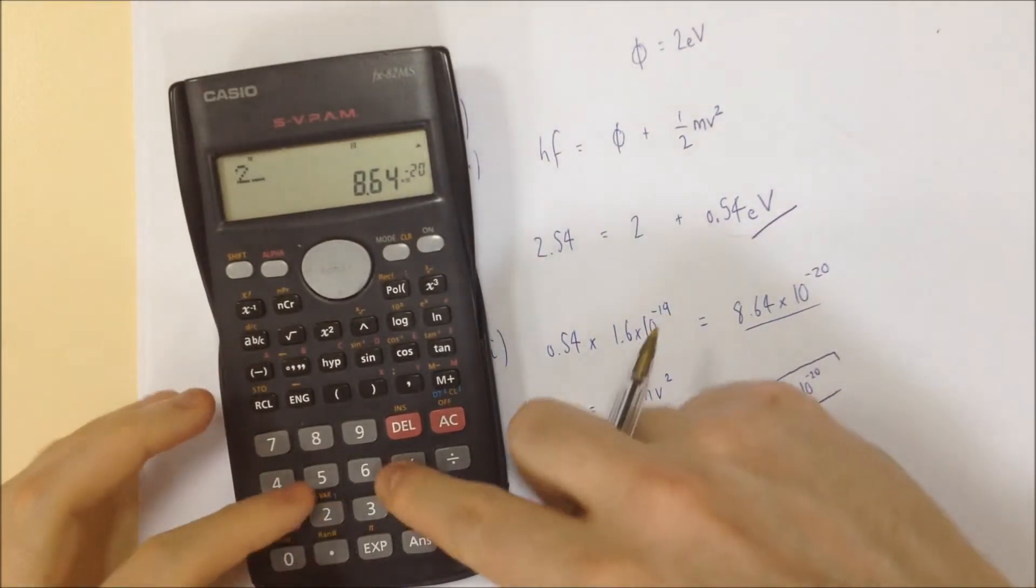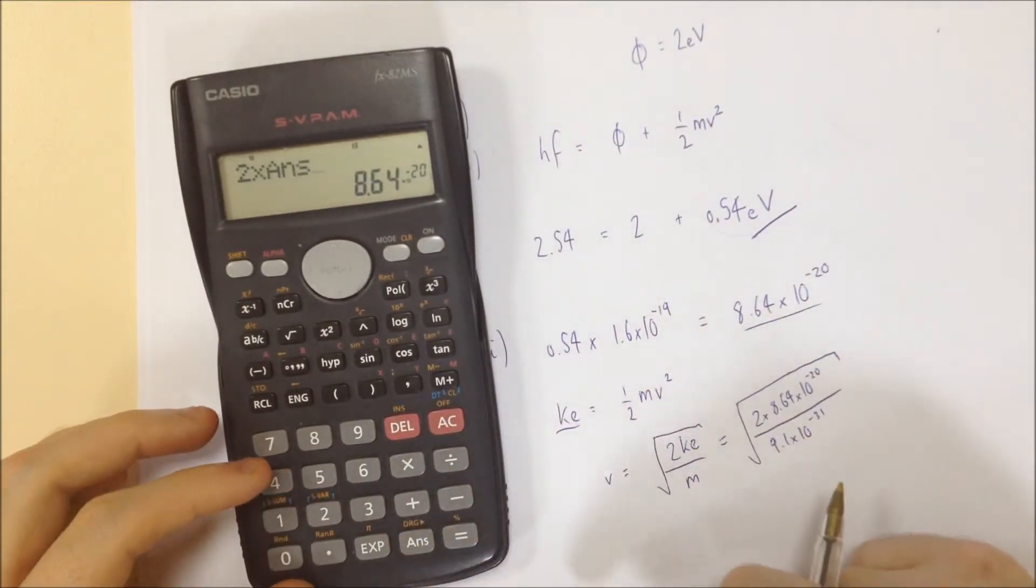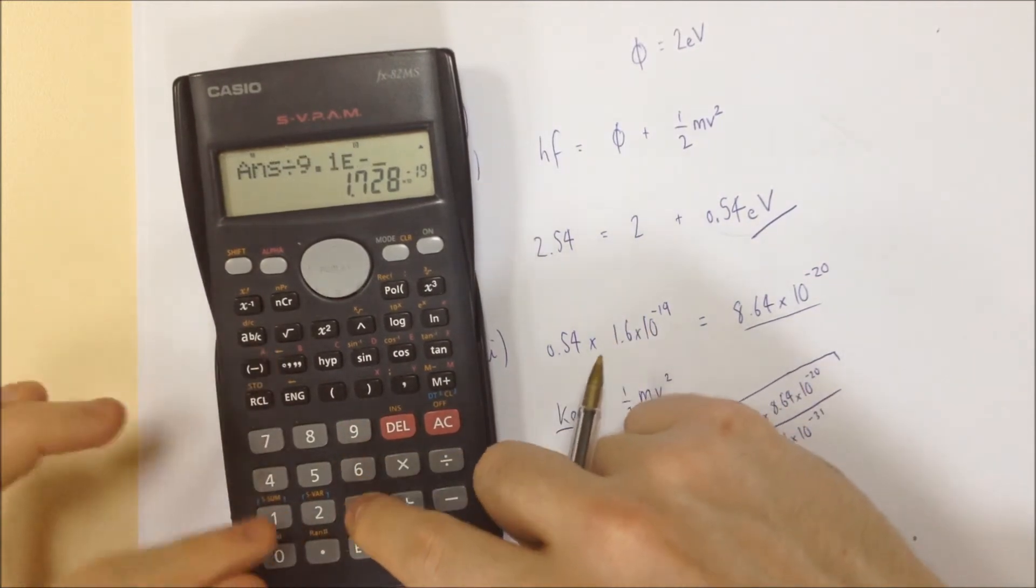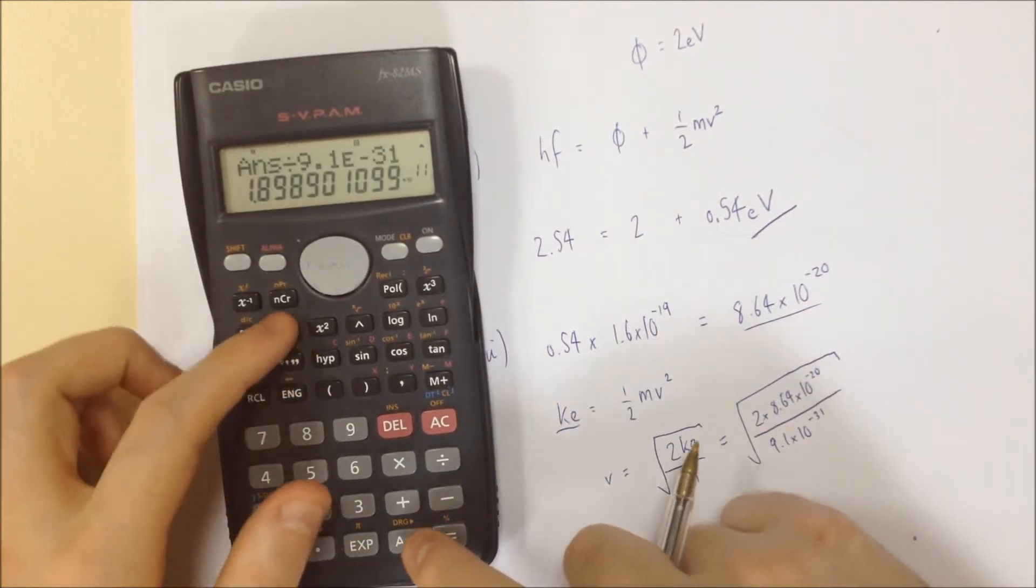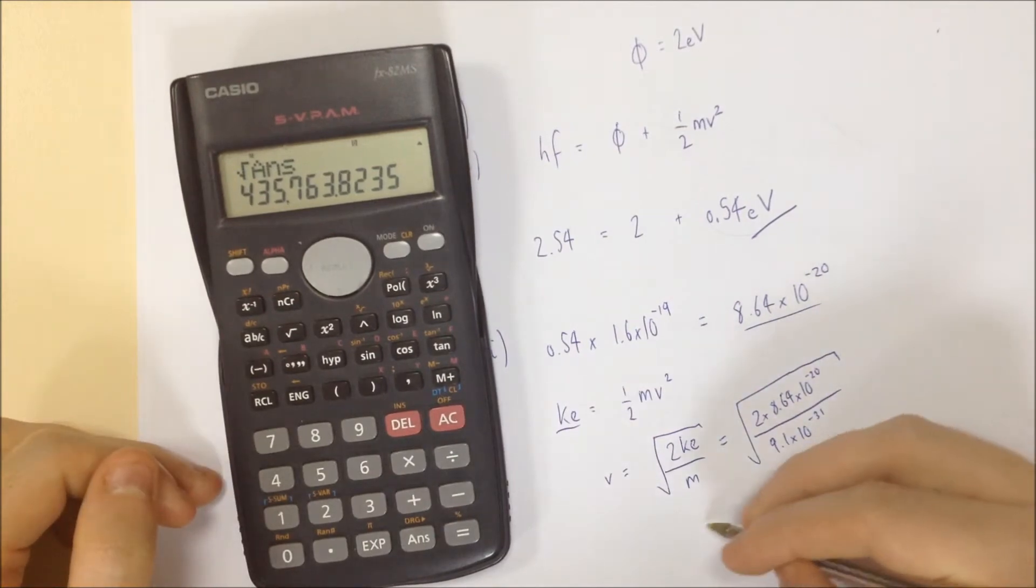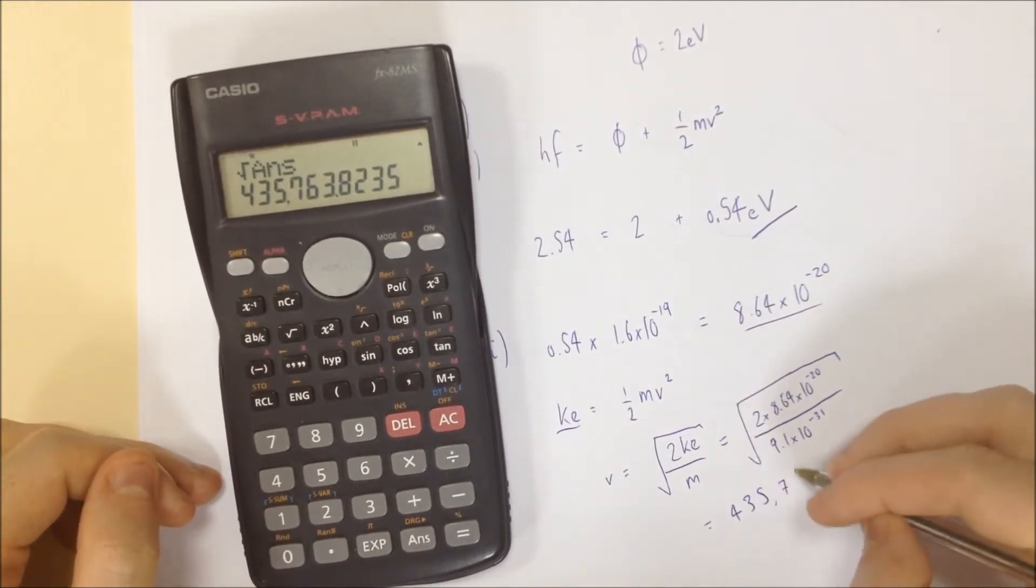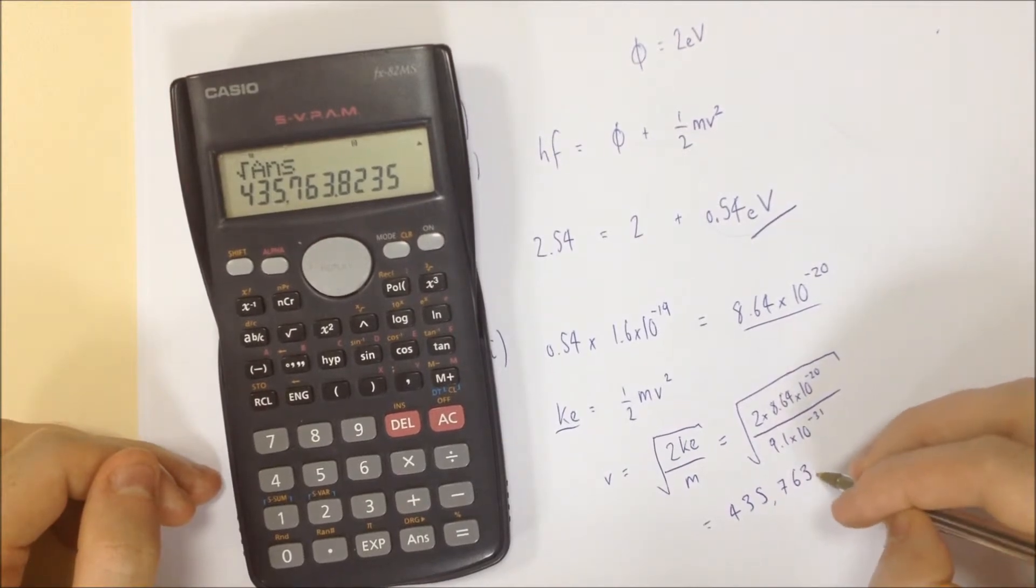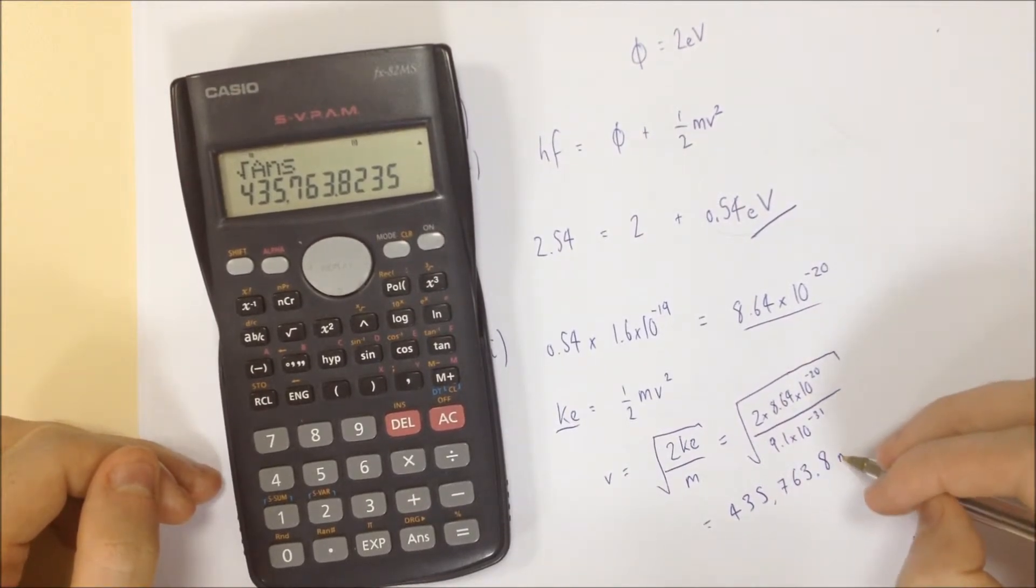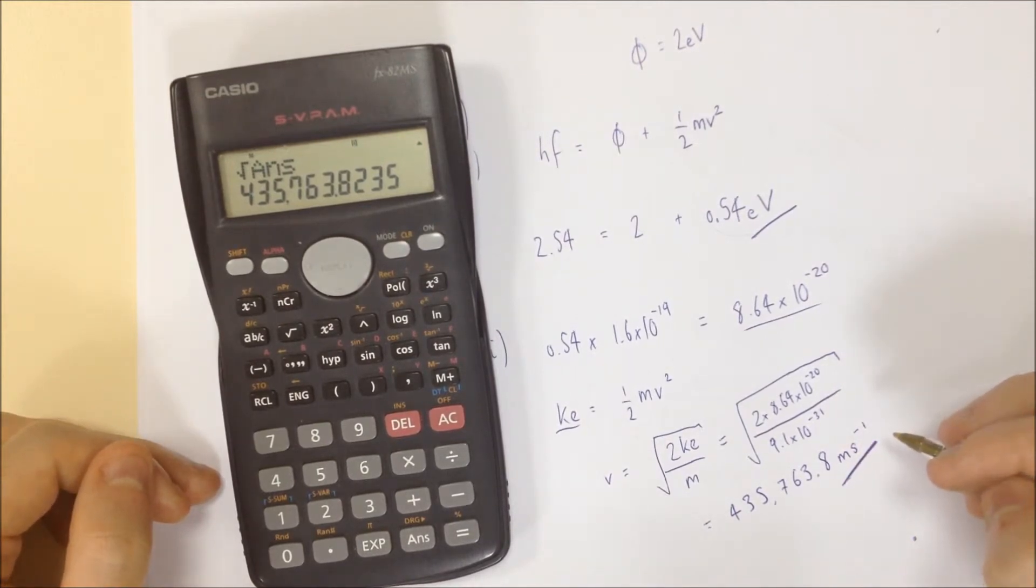So 2 times my answer. Divide by 9.1 times 10 to the minus 31. Square rooted. And I get an answer of 435,763.8 meter per second. That's my final answer for my velocity.